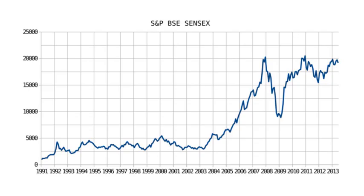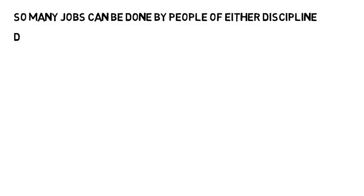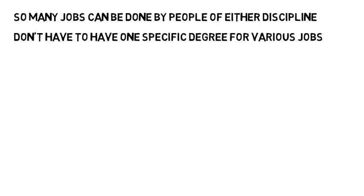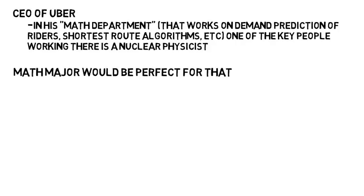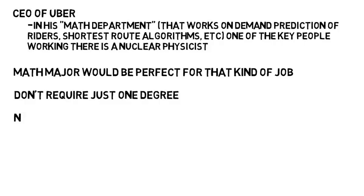Now something I need to emphasize especially for these two majors is that so many jobs can be done by people of either discipline. You so often don't have to have one specific degree for various jobs. For example, the CEO of Uber has brought up multiple times that in his quote math department that works on demand prediction of riders, shortest route algorithms, and so on, one of the key people working there is a nuclear physicist. I just said that a math major would be perfect for that kind of job, but instead they have someone who specializes in the study of protons and neutrons and their interactions. That's not related at all really. So why is this? Because these jobs often don't require just one degree. You need the skills to do the job and various disciplines can give you those skills.